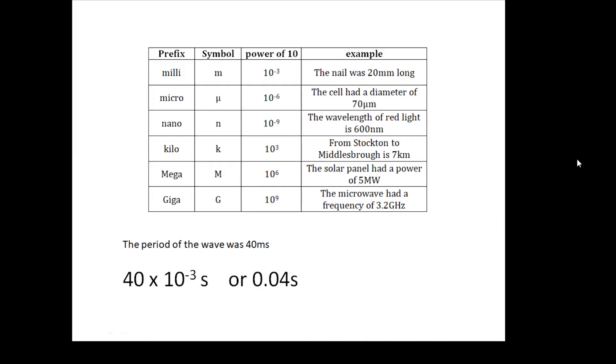So, milli, little m, is 10 to the minus 3. You know, the nail was 20 millimeters long. Micro has this symbol, mu, 10 to the minus 6. The cell had a diameter of 70 micrometers. And nano, little n, is 10 to the minus 9. The wavelength of red light is about 600 nanometers. 10 to the minus 9 meters. The first three are for small things.